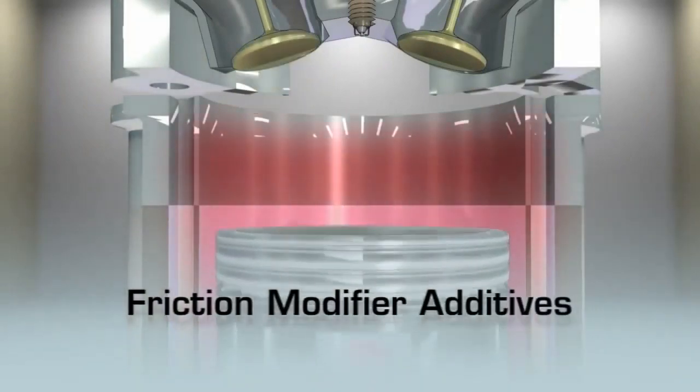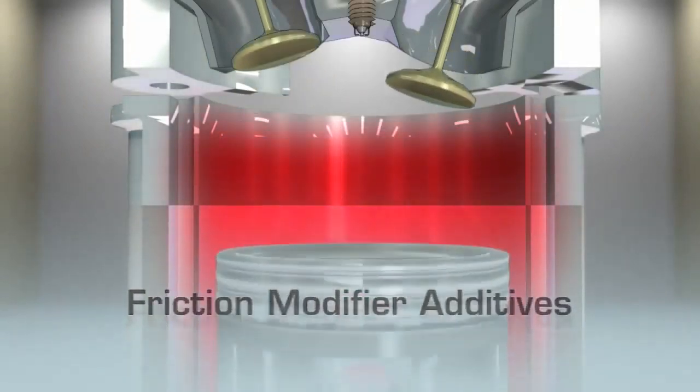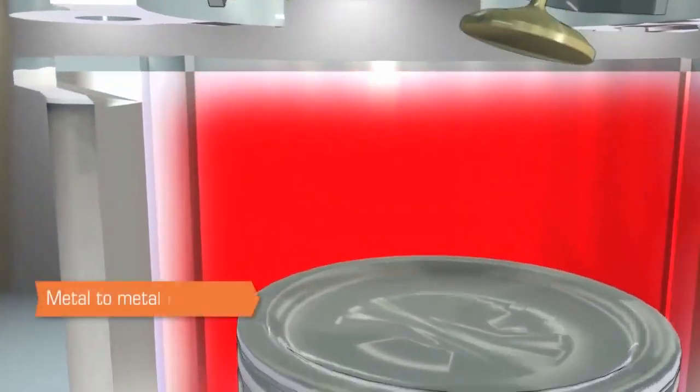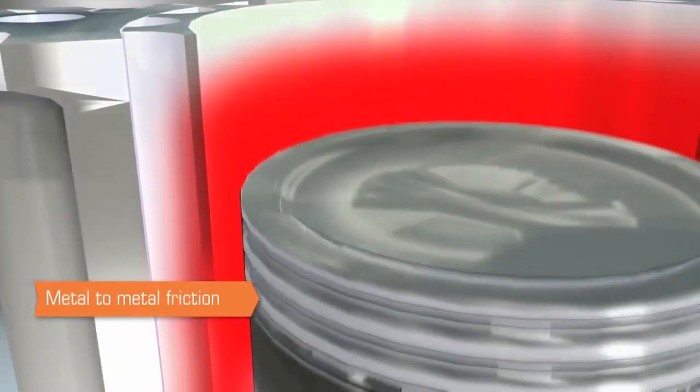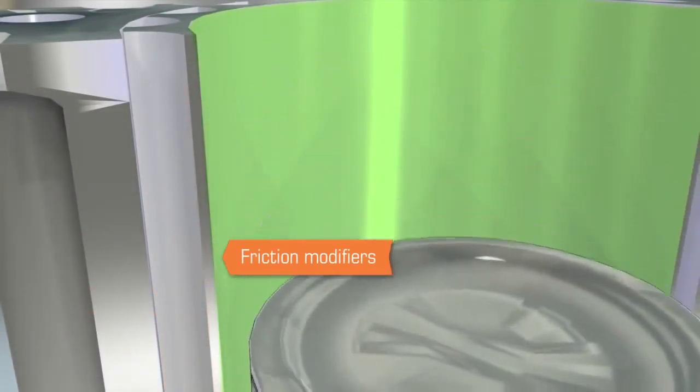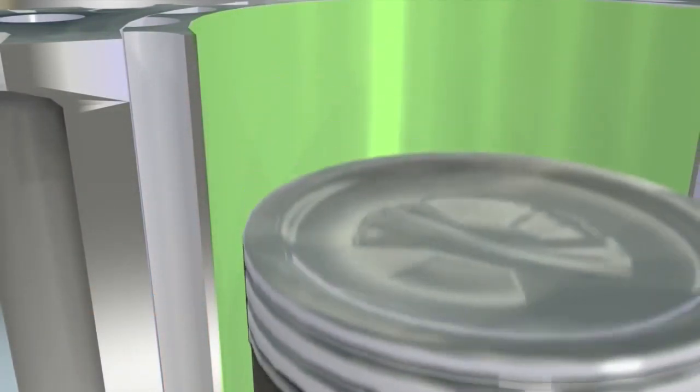Friction modifiers are yet another type of additive at work in an engine. They reduce the energy that can be lost during the four-stroke process through metal-to-metal friction of moving parts. Friction modifiers in gasoline can provide significant improvements to fuel economy as well as reduce engine wear.